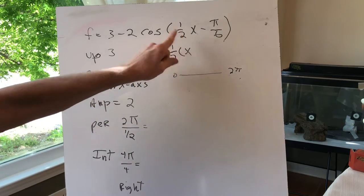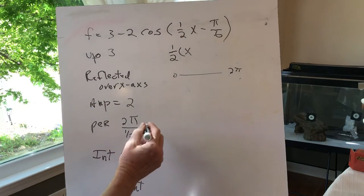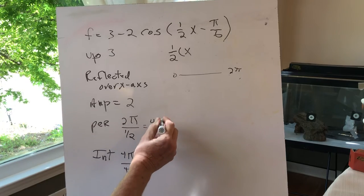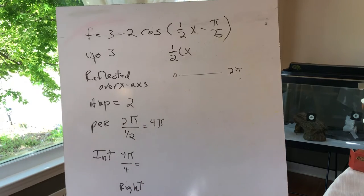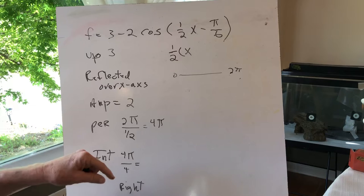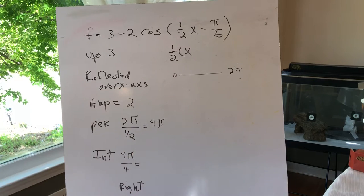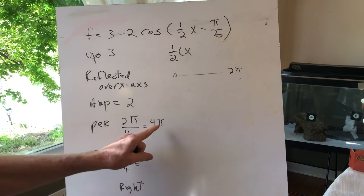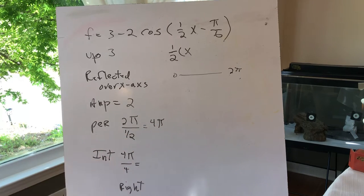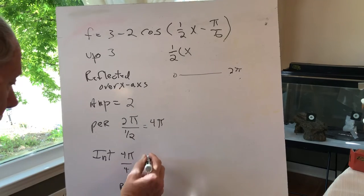I always suggest you use your calculator when you're dividing fractions. Two divided by 1/2 is 4. Then we break that into four intervals. Take your period 4π and divide by 4, and you get π, which is going to be nice and easy to count by π.